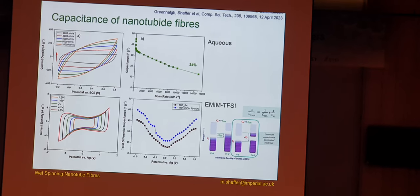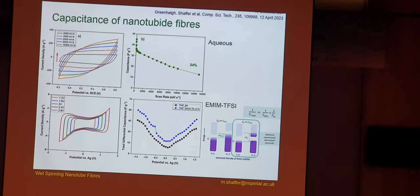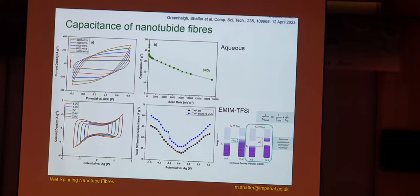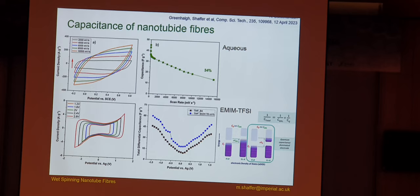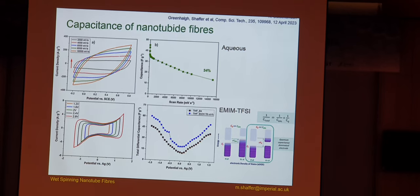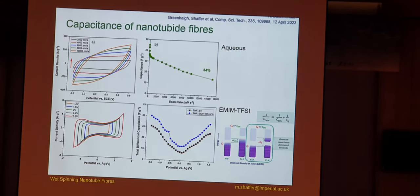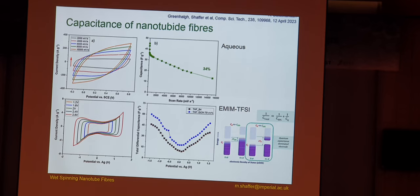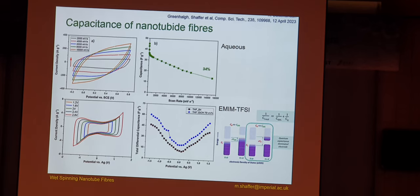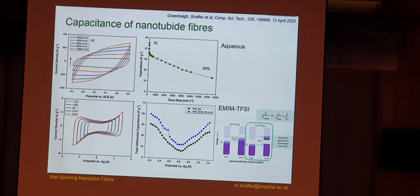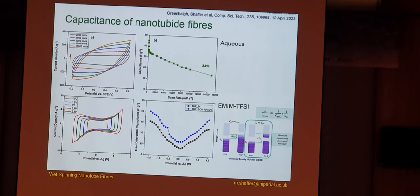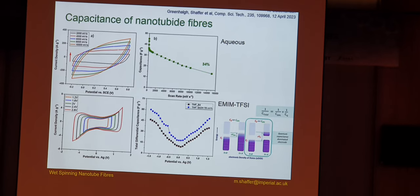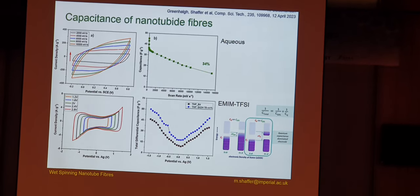These are the CVs relating to those aqueous fibers. You see a nice square sort of behavior. It begins to distort, but notice the rates at which it's beginning to distort. It's 10,000 millivolts per second. So, it's extremely fast scan rates, maybe 100 times higher than you might normally start to see these kind of distortions. That really indicates that you have extremely good transport, both of the electrons along the fiber electrode and of the ions in and out of the fiber. You can, therefore, get high power densities from these systems.